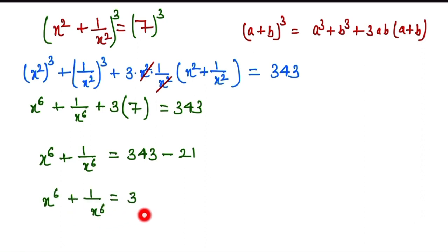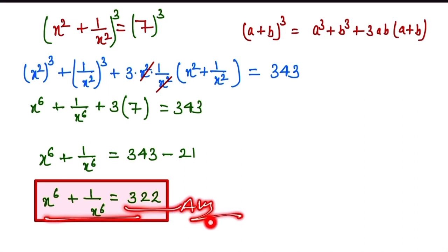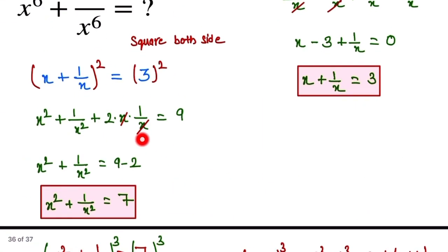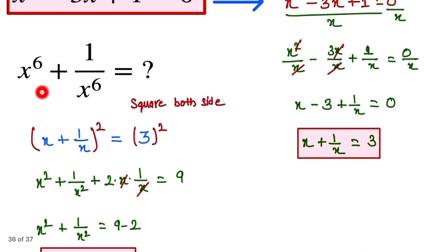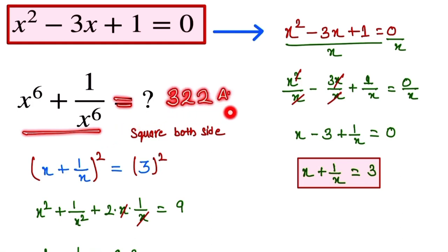So the value of x to the power 6 plus 1 over x to the power 6 is 322, and this is our final answer. Thank you so much for watching. If you like the video, please subscribe to our channel and share it with your friends.